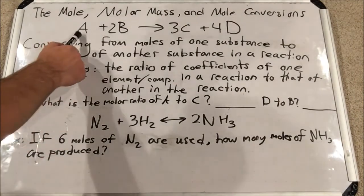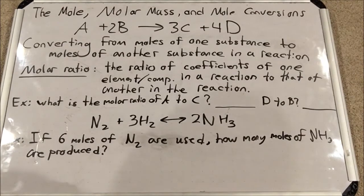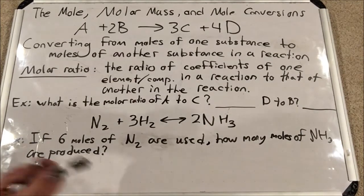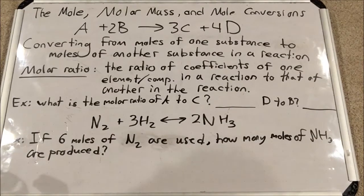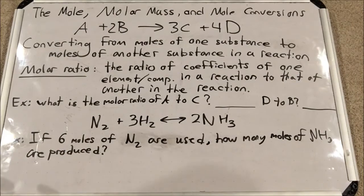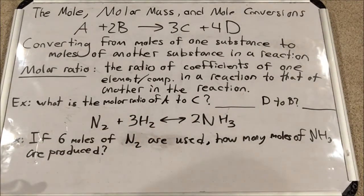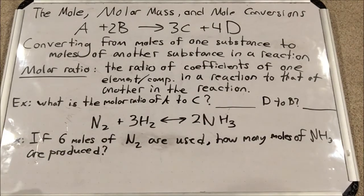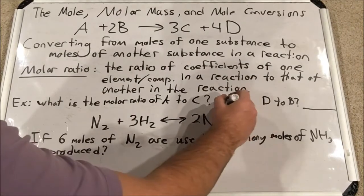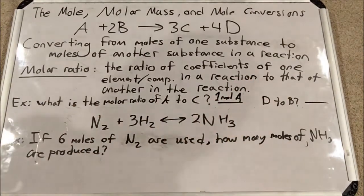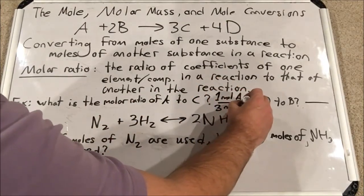You can look at this as individual particles or think of it in moles. A ratio in chemistry is usually a fraction for direct comparison. So if I'm asked for the molar ratio of A to C in this reaction, I put moles of A on top and moles of C on bottom: one mole A over three moles C.